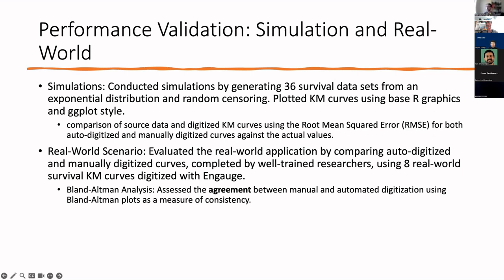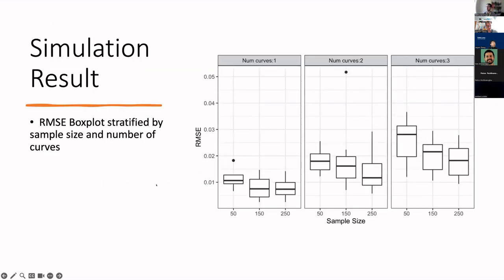Here are the simulation results. We show an RMSE box plot stratified by sample size and number of curves. The y-axis shows RMSE from 0 to 0.05, and the x-axis shows sample size ranging from 50 to 250. As the sample size increases, the RMSE shows a decreasing trend. We also compare three settings: 1, 2, and 3 curves. As the number of curves increases, there is an increasing trend in RMSE.